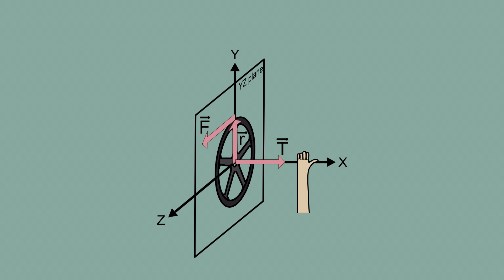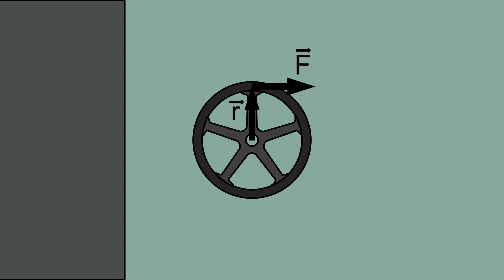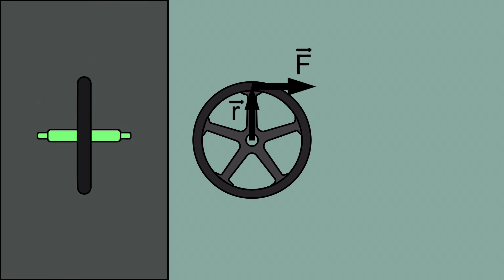Alright, this is enough information required to understand the gyroscopic effect. Let's understand it with the help of a bicycle wheel. Suppose you want to rotate this bicycle wheel — you will apply a force perpendicular to the radius, which means you are applying a torque. The direction of the torque vector is going inside the screen, as determined by the right-hand rule we discussed. As soon as we apply the force, the wheel starts to rotate, which will generate angular momentum in the direction going inside the screen.